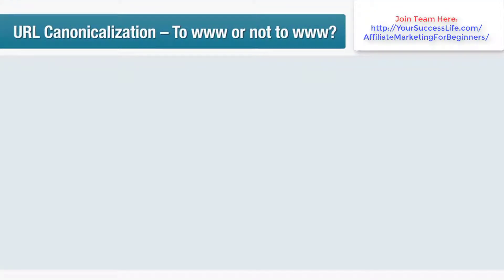This is why you'll sometimes type an address into your browser and get the 'this page doesn't exist' error, but if you add or remove the www the page suddenly springs back into existence. In this lesson we look at URL canonicalization — basically, www or not www.